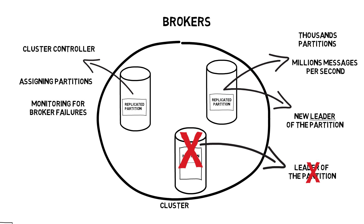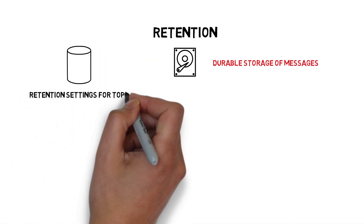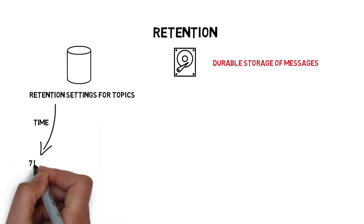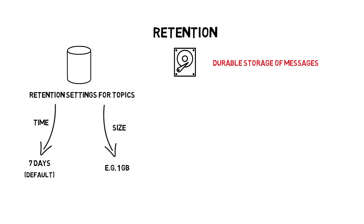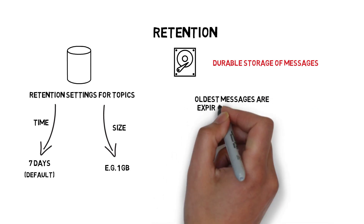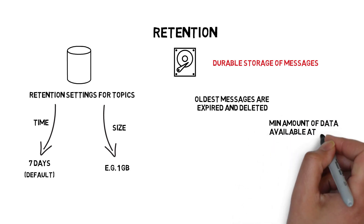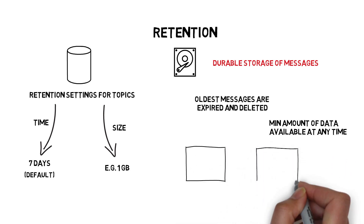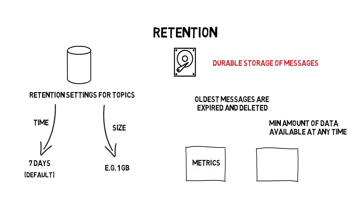One of the key features of Kafka is retention, which provides durable storage of messages for some period of time. Kafka brokers are configured with a default retention setting for topics, either retaining messages for a period of time — 7 days by default — or until the topic reaches a certain size in bytes. Once these limits are reached, the oldest messages are expired and deleted. Individual topics can also configure their own retention settings. For example, a topic for storing metrics might have a short retention of a few hours, while a topic for bank transfers might have a retention policy of a few months.